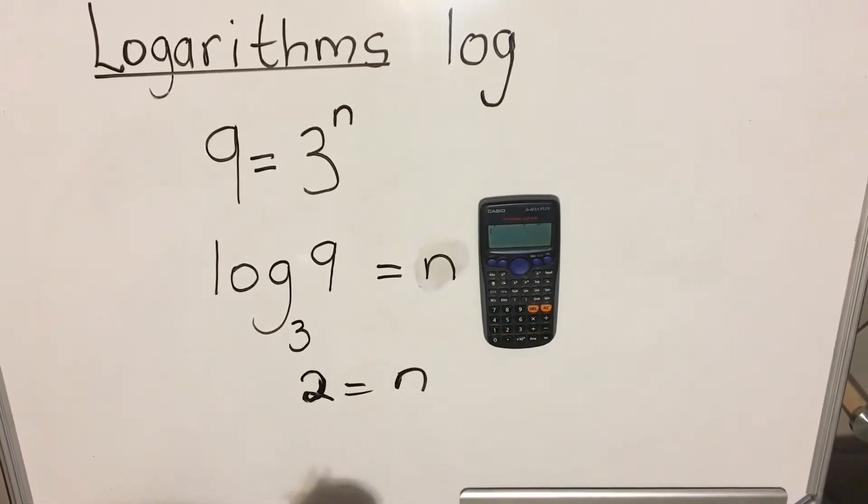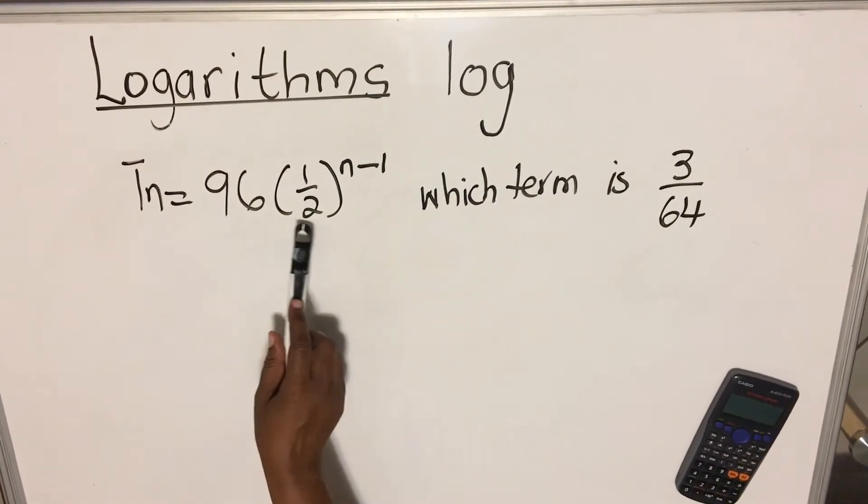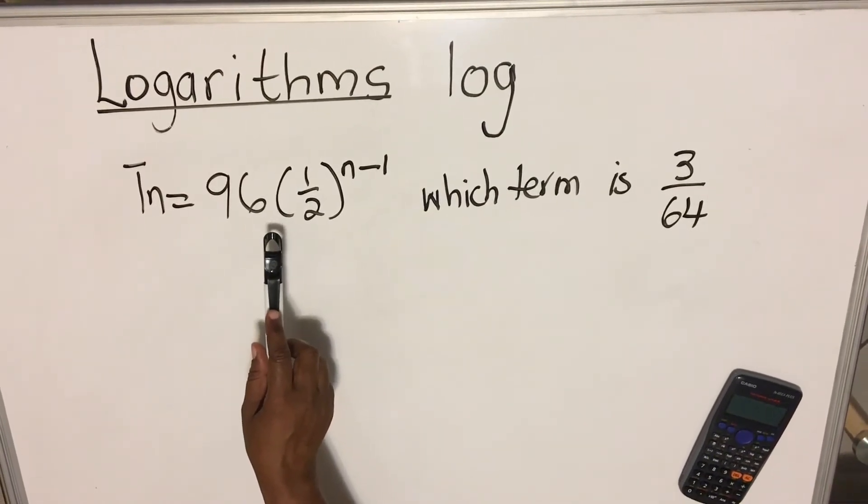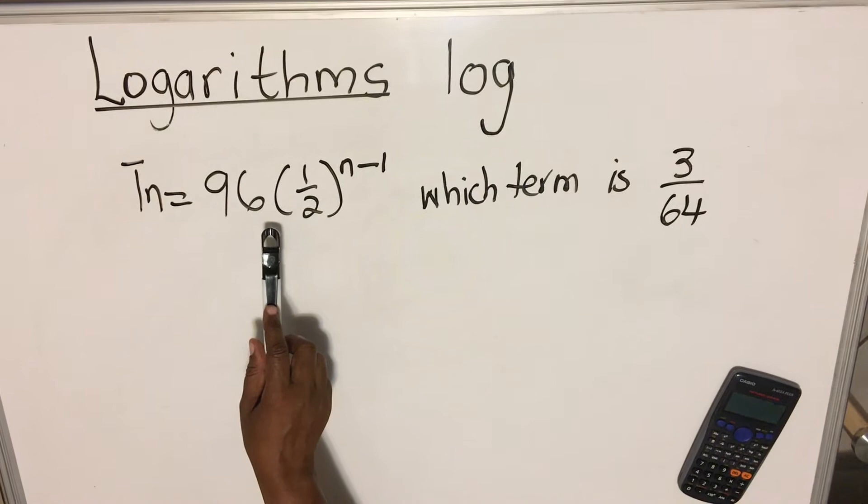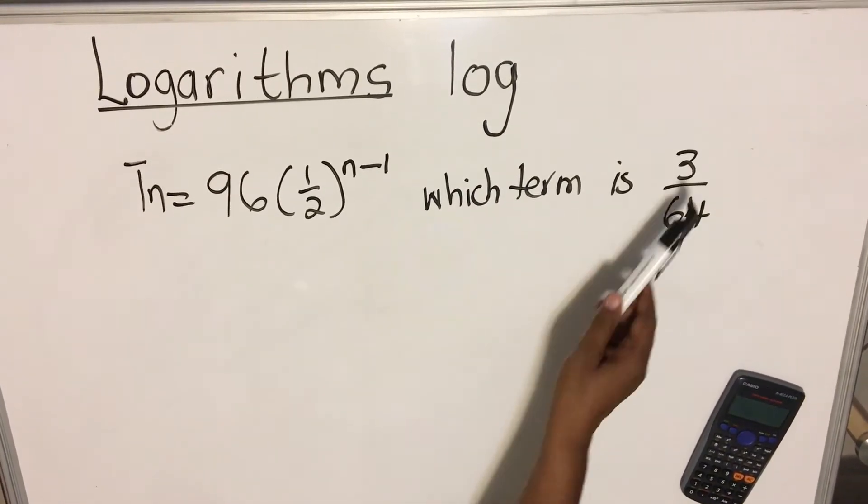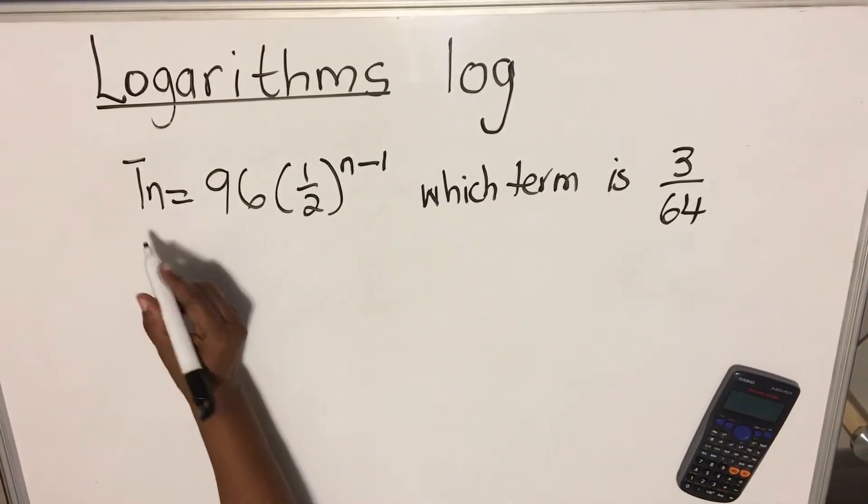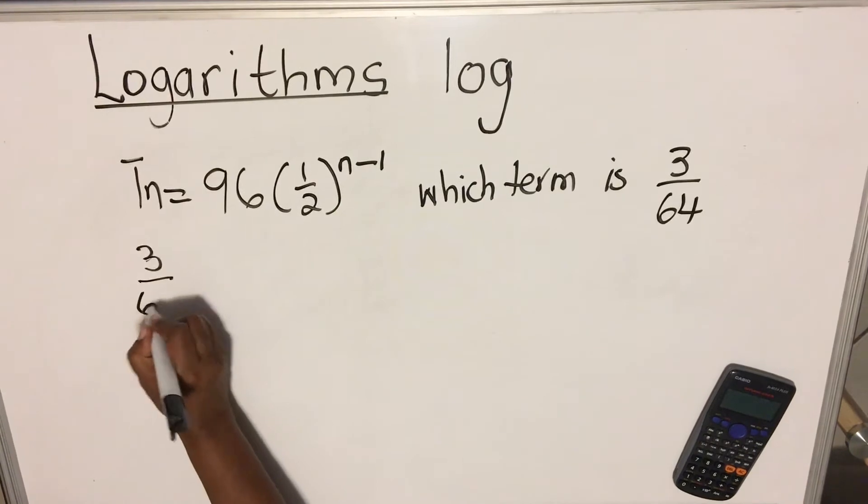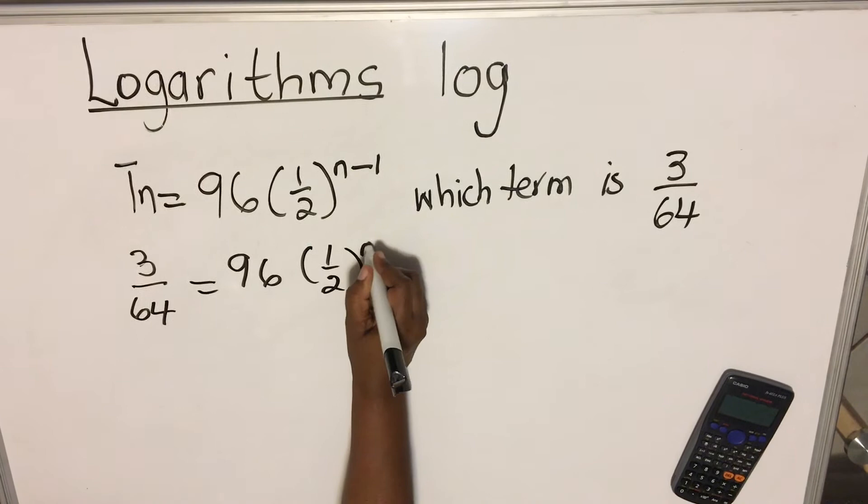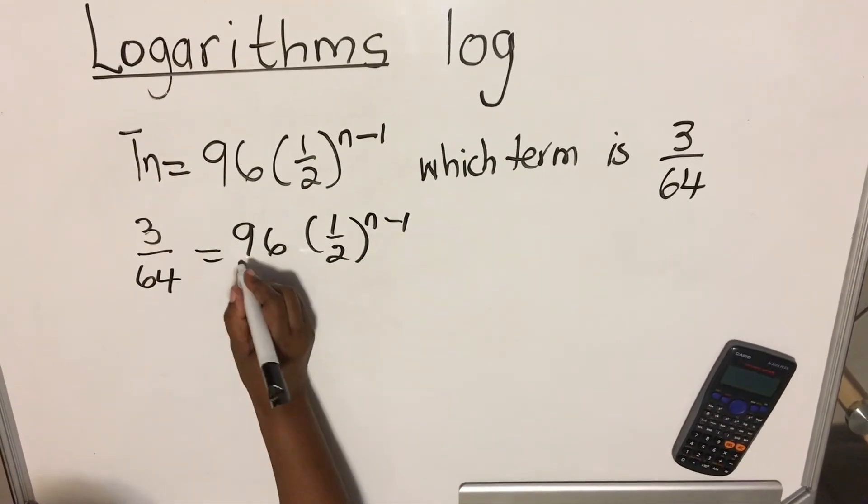I'm going to do it again. Let's look at a geometric sequence. They've given you this pattern for a particular geometric series. So they tell you that you have to find which term is 3 over 64. You're going to substitute that with 3 over 64. And then you have 96 and 1 over 2 to the power n minus 1.